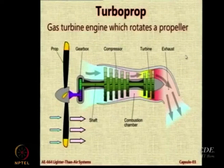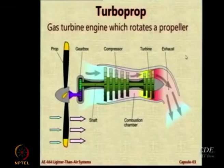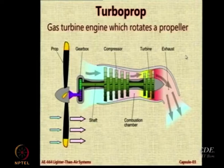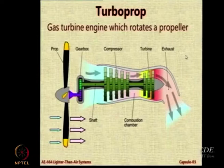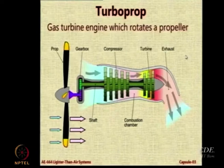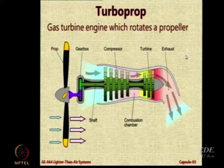Now, there are also some other types of engines which are popular for airships. One of them is the turboprop type. The turboprop type comes in two versions. One version is where we see a turbine — in this case an axial flow turbine having a compressor, combustion chamber and turbine. Onto the compressor shaft you attach a gearbox and that drives the propeller. So, why do we need a gearbox? To reduce the RPM of the propeller.